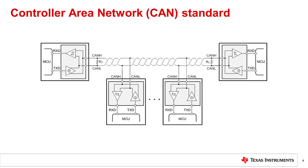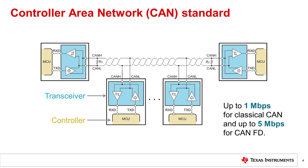The CAN standard defines both a protocol and a physical layer for asynchronous, serial communication, and multipoint bus applications. Each node consists of a CAN transceiver and a CAN controller in an MCU. Communication occurs over a differential bus at up to one megabit per second for classical CAN, or five megabits per second for CAN with flexible data rate. CAN is designed to be used with twisted pair cabling. The network should be wired in a bus topology, limiting stubs as much as possible.